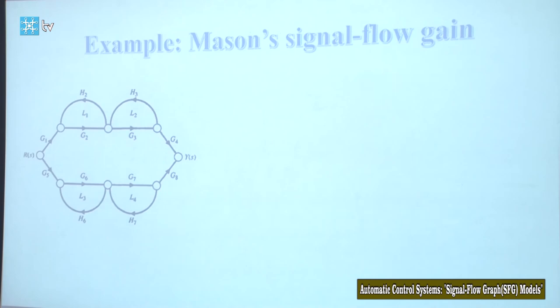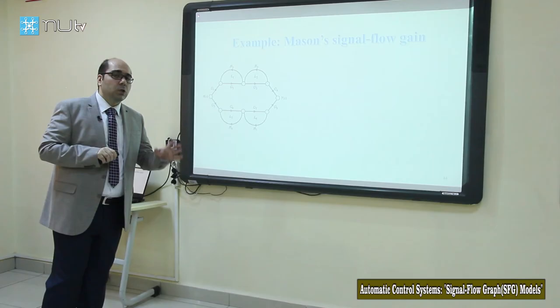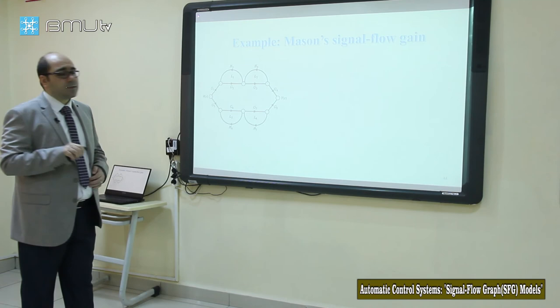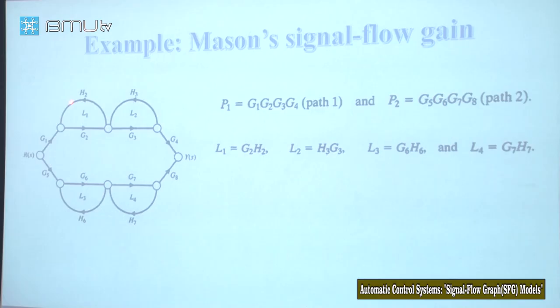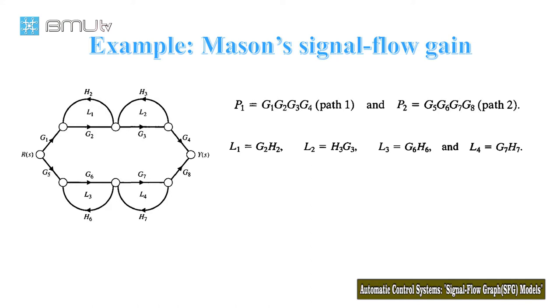First we need to find the different loops in this graph. L1 is the first loop; its gain is G2 × H2. L2 has gain G3 × H3. L3 has gain G6 × H6. And the last one, L4, has gain G7 × H7.